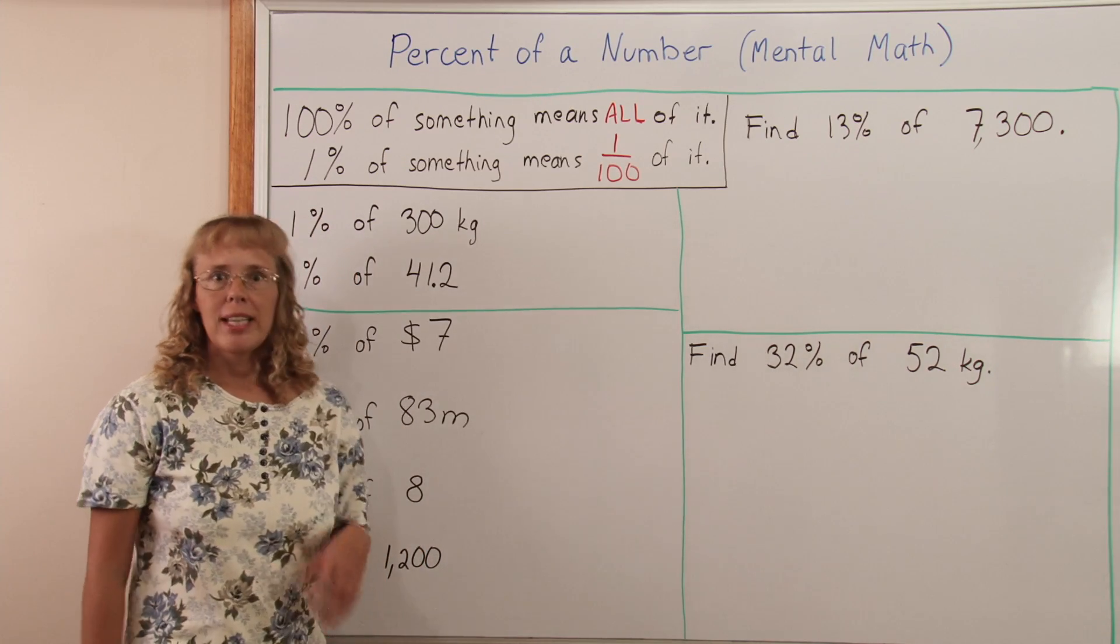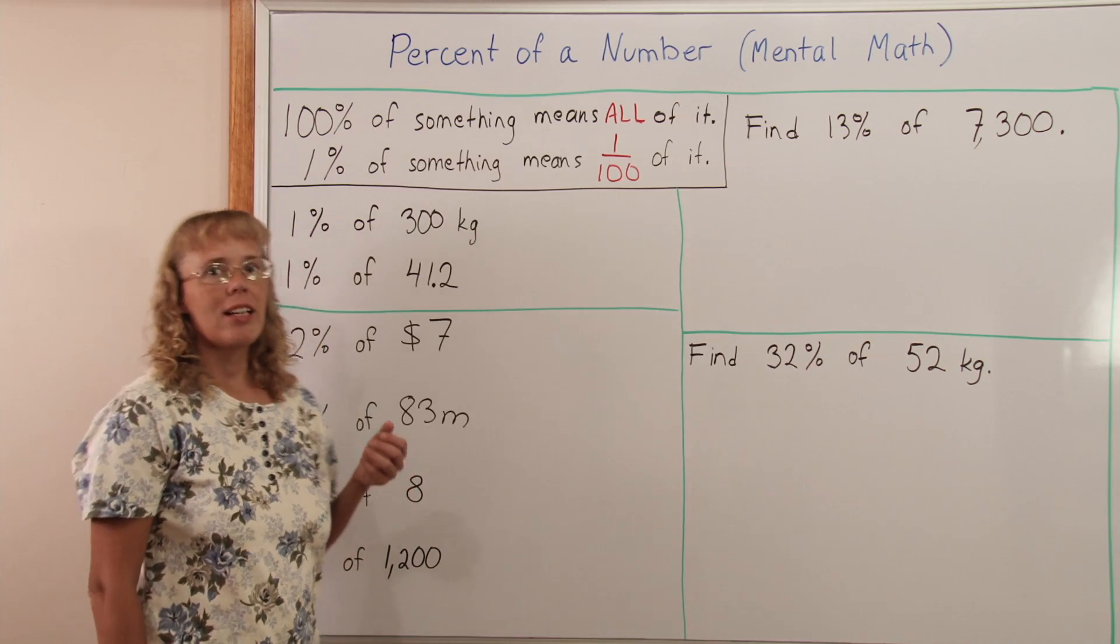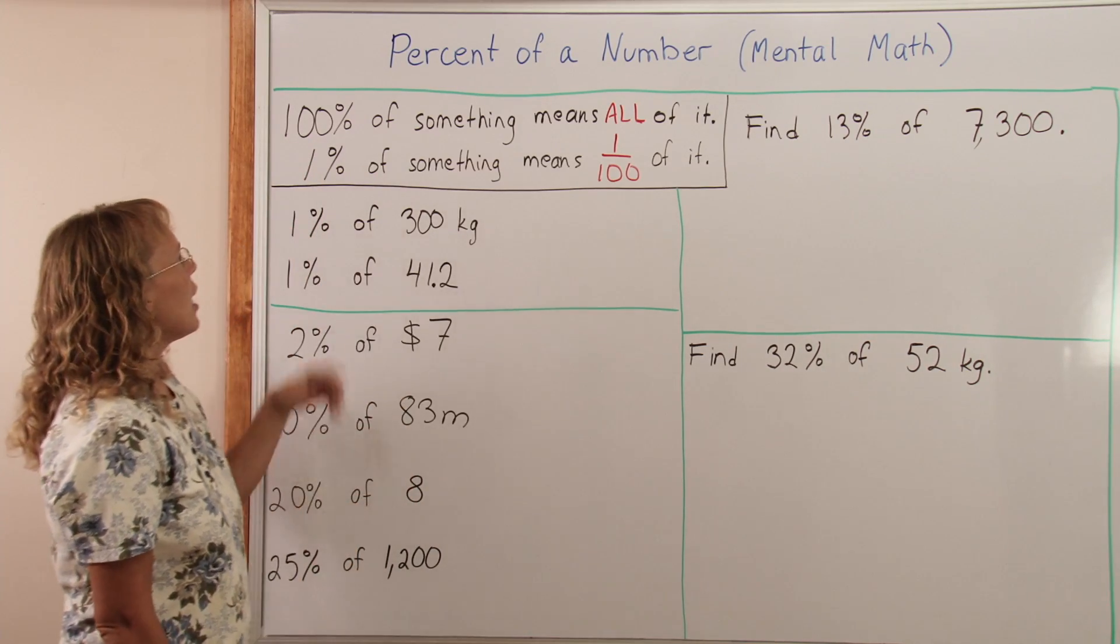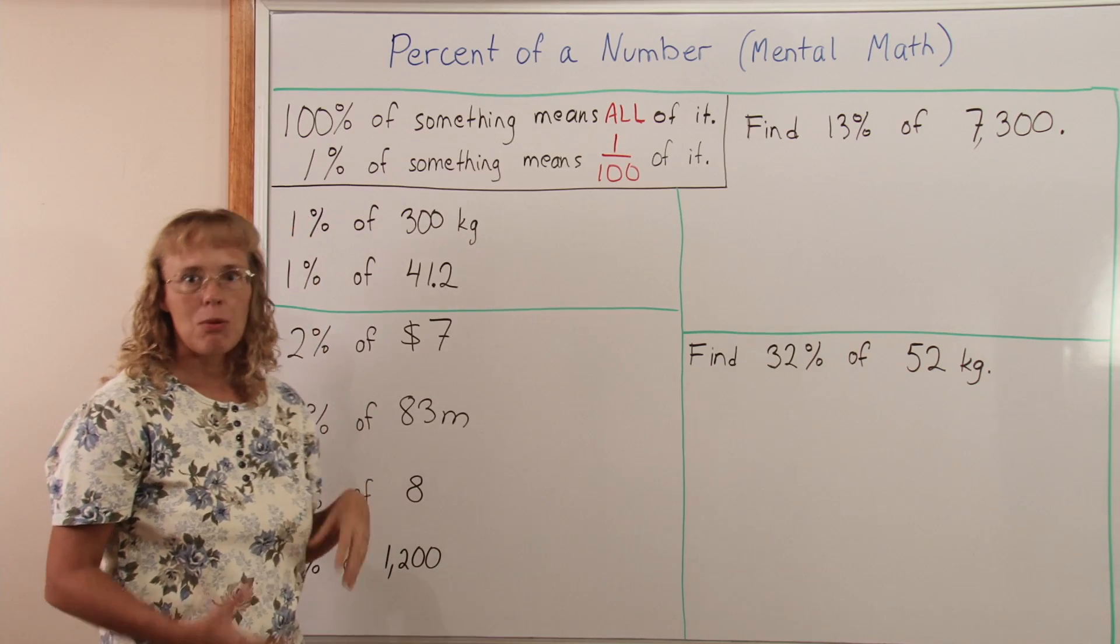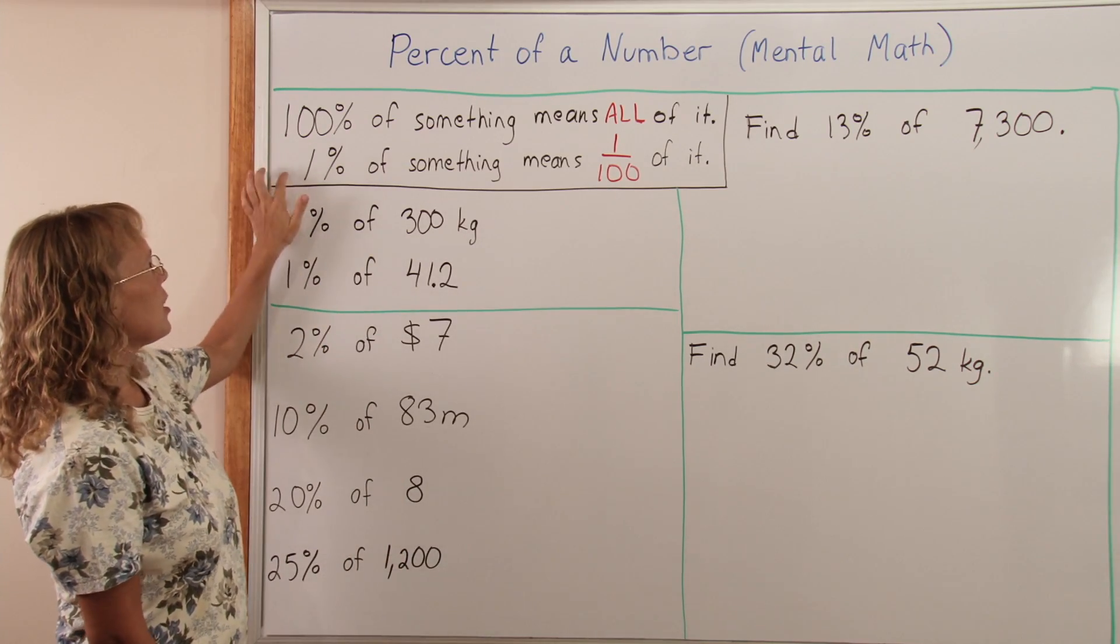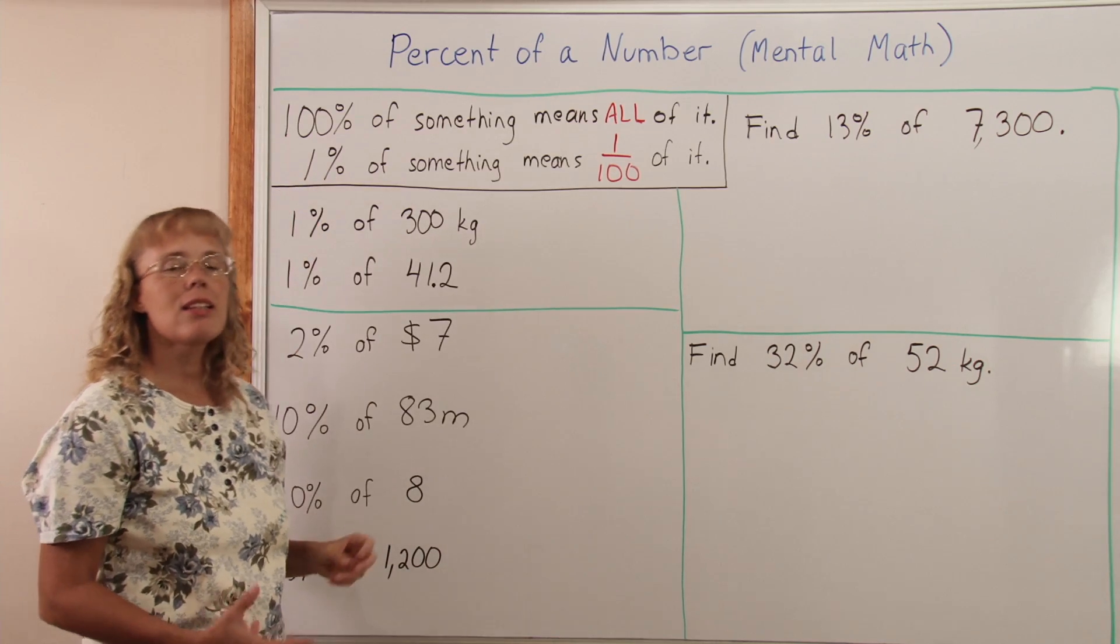The two basic guidelines we need to keep in mind are here. 100% means all of it, and 1% of something means one hundredth part of it. The 1% one is the main thing we use here.